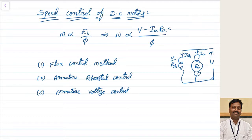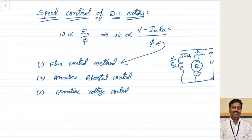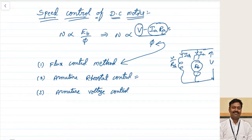The flux depends on different parameters for different machines. By controlling any one of these parameters, we can control speed. First, we can control flux — that is the flux control method. Second, we can control the Ia×Ra drop by inserting resistance — that is the armature control method. Third, we can change the supply voltage applied across the armature — that is also called armature control. So these are the three techniques.